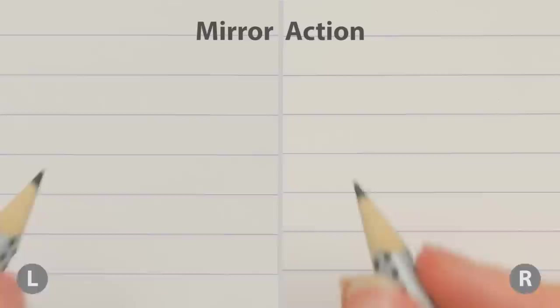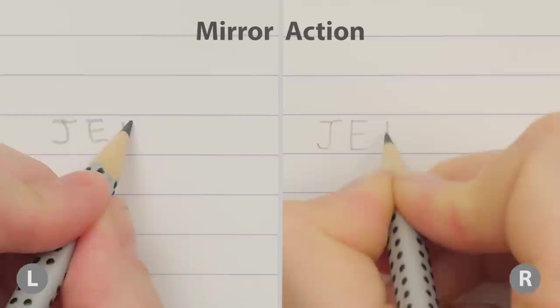Think mirror action. Lefties often need to push the pen where right-handers drag to form letters. Use light pressure and make crossbars from right to left to avoid digging your pen into the paper.